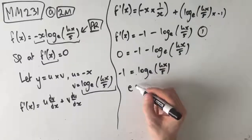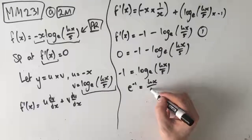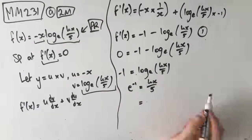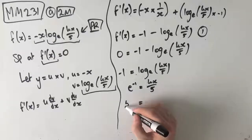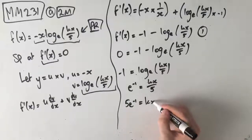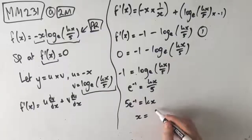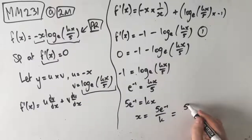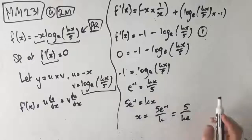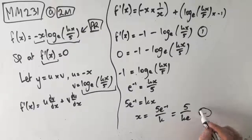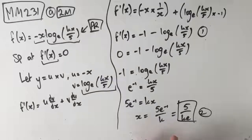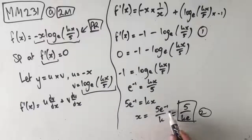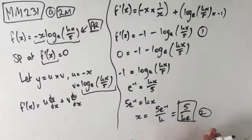Rearranging the log, we get e to the power of negative 1 equals kx on 5. From here, we get 5e to the negative 1 equals kx, which means x equals 5e to the negative 1 over k, which equals 5 over ke. This is our second mark — x equals 5 on ke is our final answer for part a.